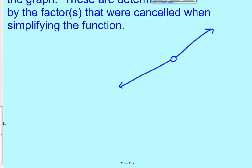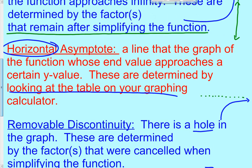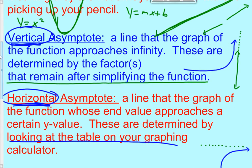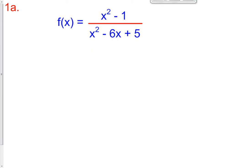The horizontal asymptote can only be found using your calculator. The vertical asymptotes and the removable discontinuities can be done without a graphing calculator. So on these first two problems in our notes, we're going to identify what the vertical asymptotes are and if there are any removable discontinuities or holes.